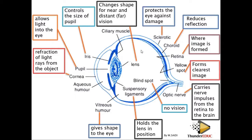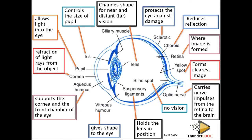The vitreous humor is a fluid found inside the eyeball. It is very important in giving the eye its shape. Because it is a liquid, it prevents compression and allows the eyeball to maintain its shape.